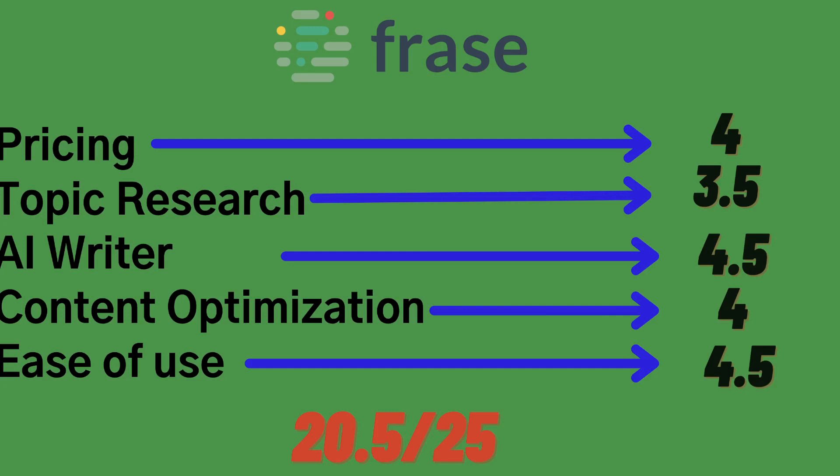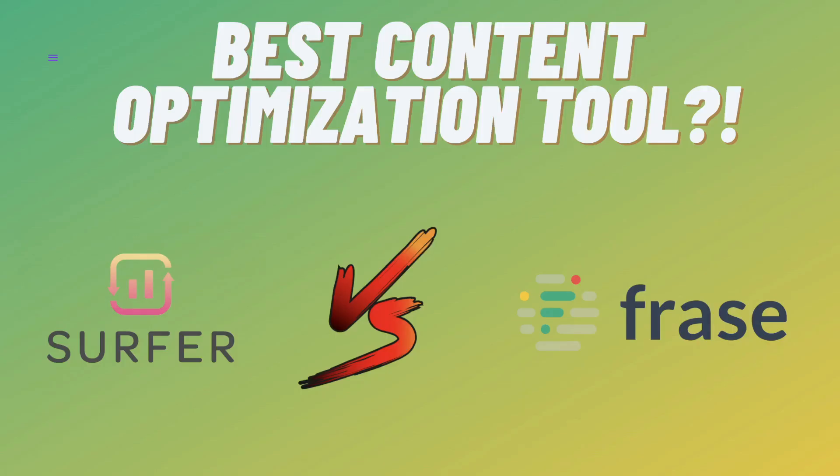Now for Phrase, I'd give them a score of 20.5 out of 25. Their pricing is a little bit lower when compared to Surfer SEO, but they do have a very good AI copywriter included in which you can browse different templates and write copy for your content. Their content optimization tools can definitely be improved to have some more information and make it a little bit easier for a beginner to start optimizing their content. So for those reasons, I'd give Phrase a score of 20.5 out of 25.